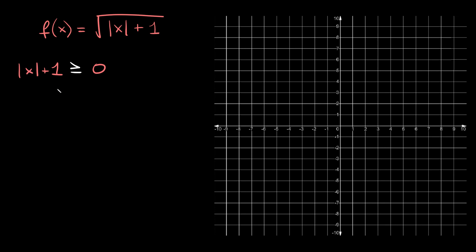Now we're trying to solve for x. The next thing we can do is get rid of this positive 1 by subtracting 1 from both sides. These cancel out and we're simply left with the absolute value of x is greater than or equal to negative 1. We just need to figure out what numbers we can plug in for x that make this inequality true. We can plug in any number for x — positive or negative — because when you take the absolute value of any number it's always positive, and any positive number is always going to be bigger than or equal to negative 1.